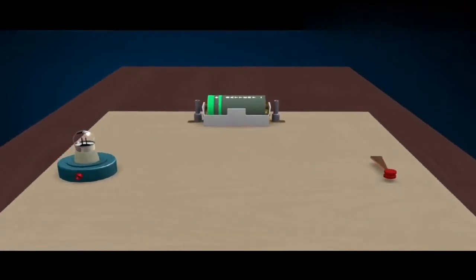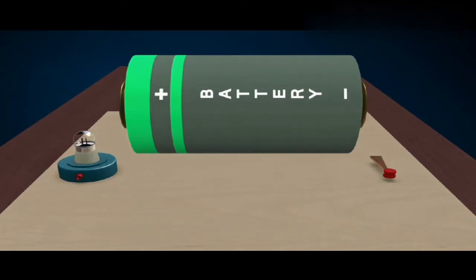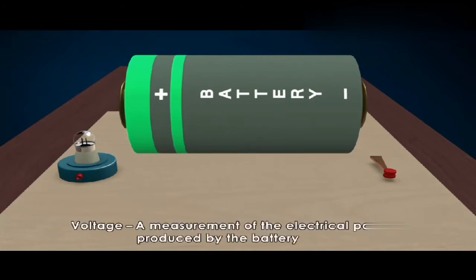A source of electricity, such as a battery, provides the electrical energy within the circuit. The battery will contain a certain number of volts, its voltage, a measurement of the electrical potential produced by the battery.